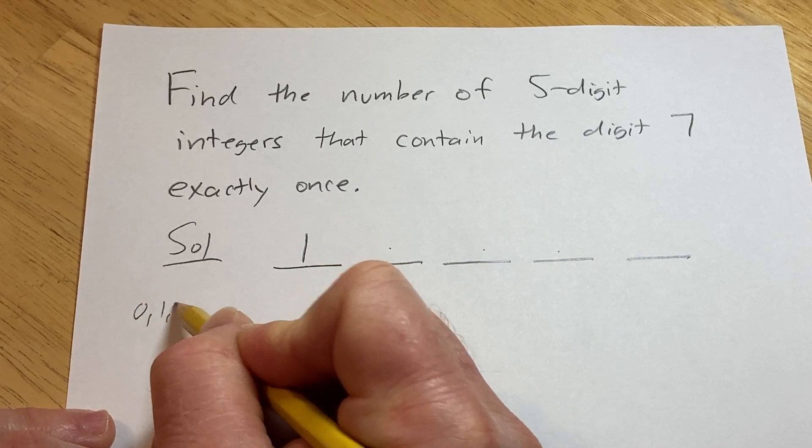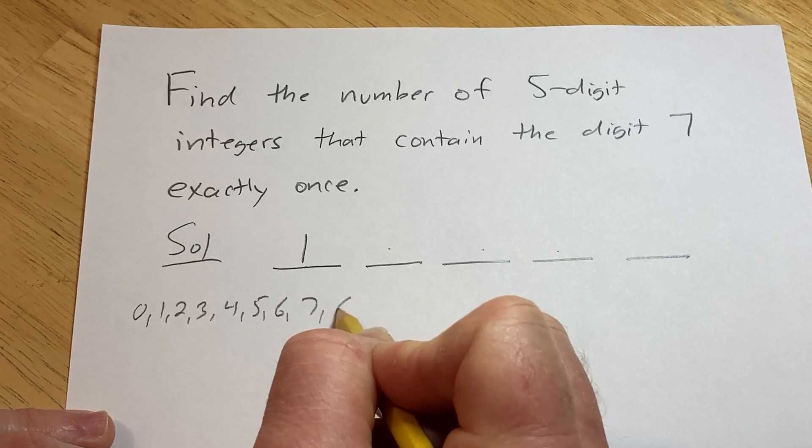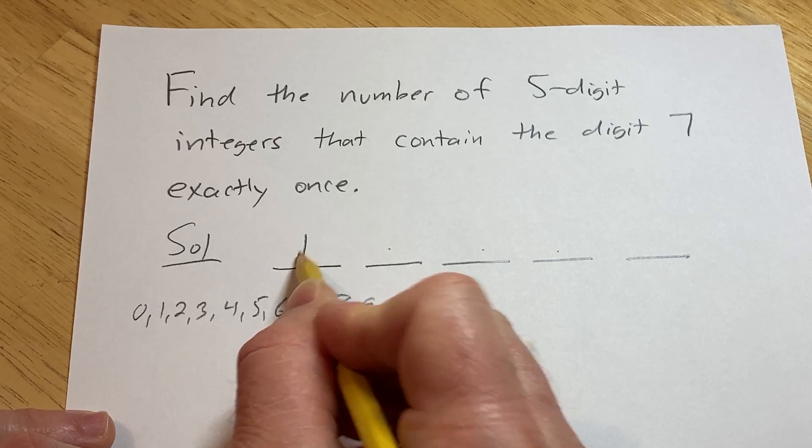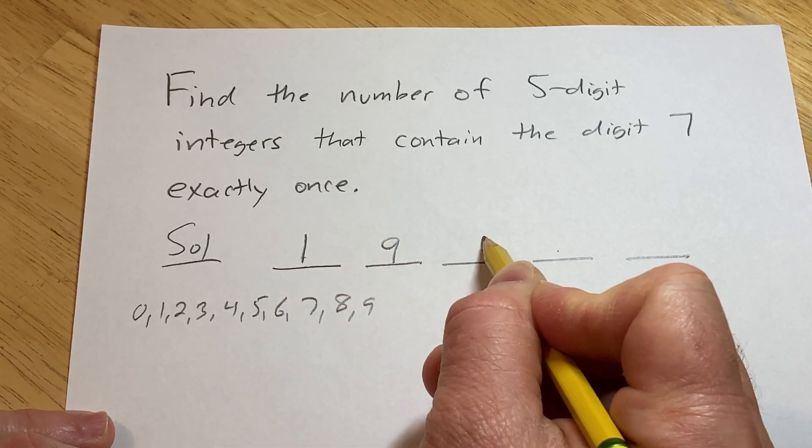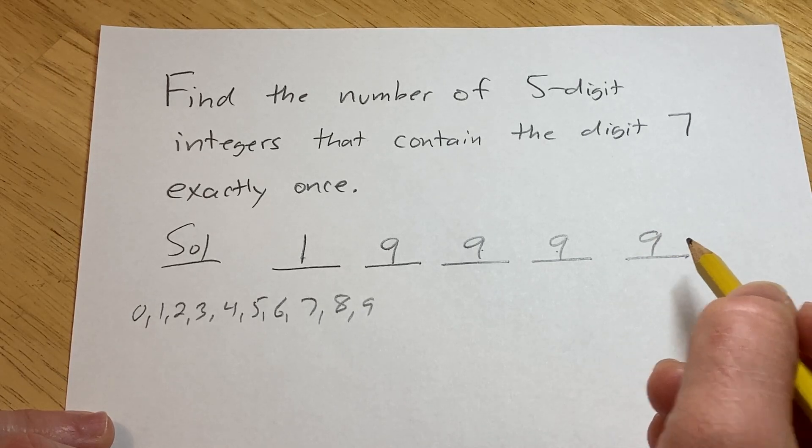0, 1, 2, 3, 4, 5, 6, 7, 8, 9. We've already chosen the 7 to be the first digit, so that leaves nine choices for this one, nine choices for this one, nine choices for this one, and nine choices for this one.